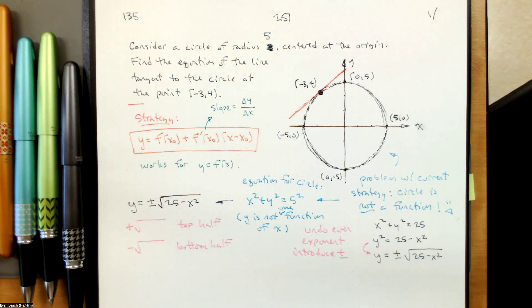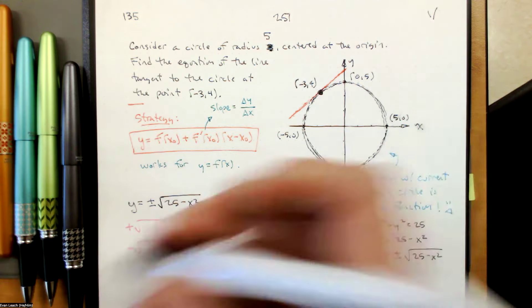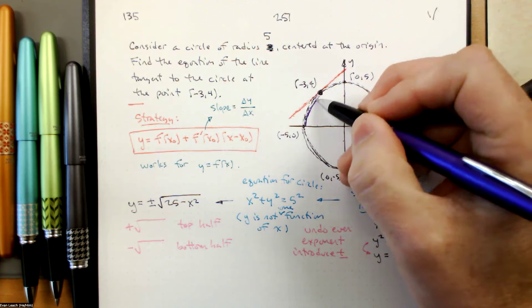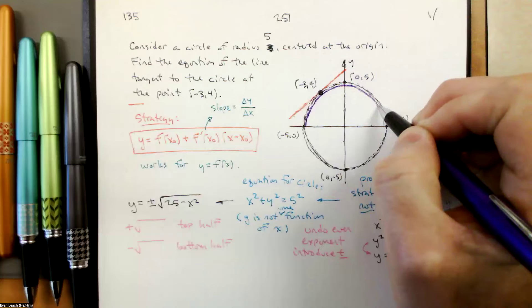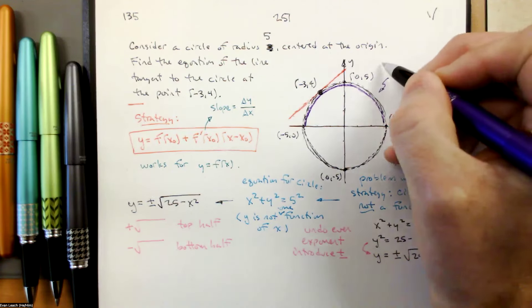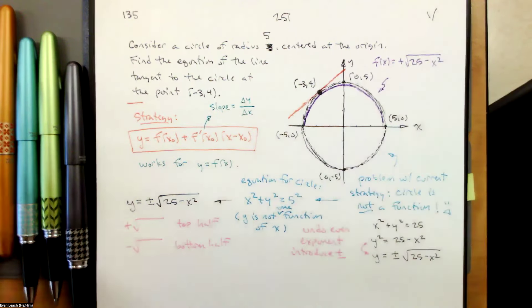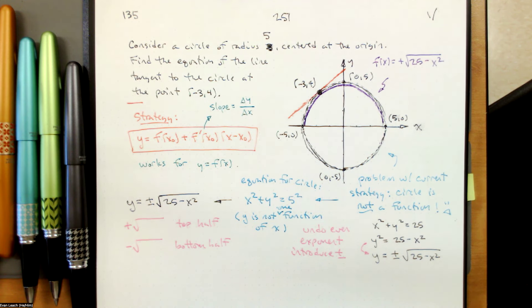Our workaround for this problem is, since our strategy wants a function, to just use the top half of the circle and say f of x equals the positive square root of 25 minus x squared. We're grabbing the top half of the circle and using that as our function. Then we can do our normal stuff: take the derivative, plug in the point, and we'll have the slope.